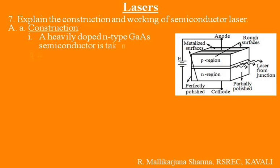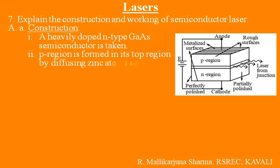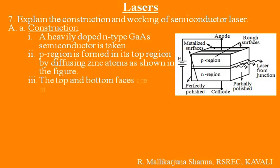First point: A heavily doped N-type gallium arsenide semiconductor is taken. Second point: P region is formed in its top position by diffusing zinc atoms, as shown in the figure.